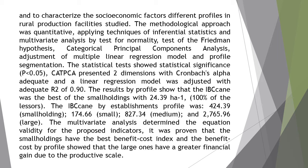The Ibican by establishment profile was: 424.39 for small holding, 174.66 for small, 827.34 for medium, and 2,765.96 for large. The multivariate analysis determined the equation validity for the proposed indicators. It was proven that the small holdings have the best benefit cost index, and the benefit cost by profile shows that the large ones have a greater financial gain due to the productive scale.